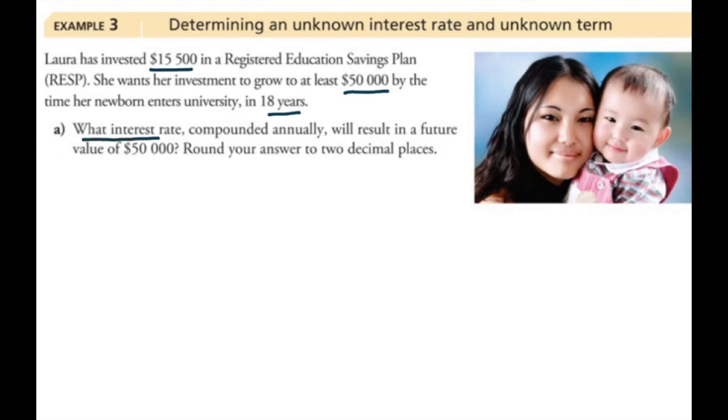And now I want to know what interest rate compounded annually will result in a future value of $50,000. So what we know? We do know her principal of $15,500. We know her final value of $50,000. We know the time that she has, which is 18 years. We know n were compounded annually, so once per year. And the interest rate is what we're trying to find here.